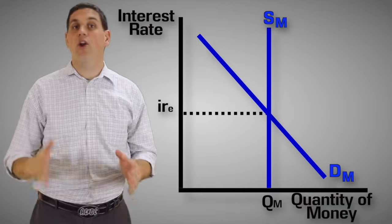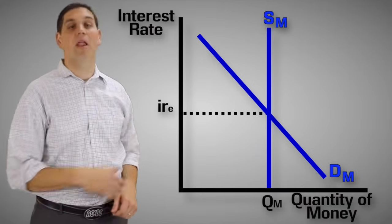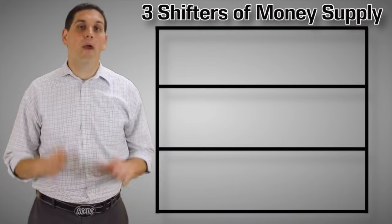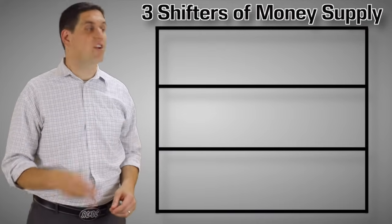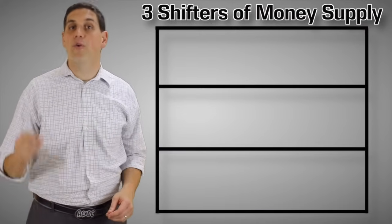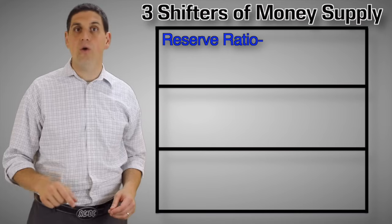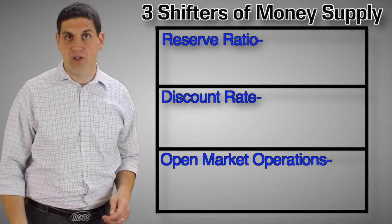You already know the money market graph, which shows you the demand and supply for money. What we have to go over now are the three different shifters of the money supply. They are the reserve ratio, the discount rate, and open market operations.